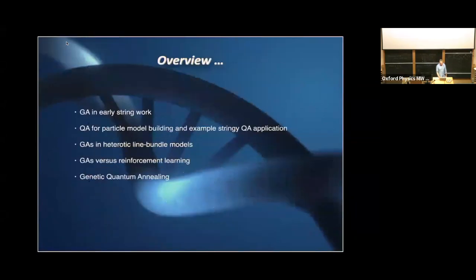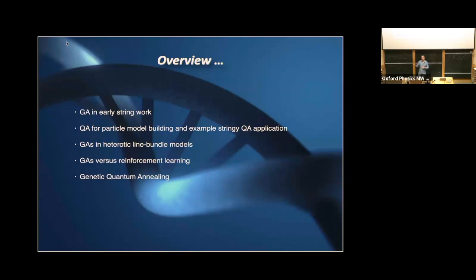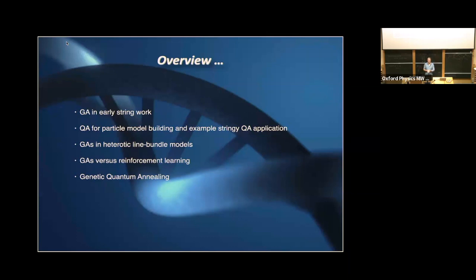This is a layout of what I'm going to talk about. I'll give you an introduction about the first attempts we made to look at genetic algorithms in string theory. The reason to talk about those, even though they're simpler models, is that those models are the earliest ones we think you can apply quantum annealing to — or annealing in general — so I'll show you what we did more recently with those models and annealing.